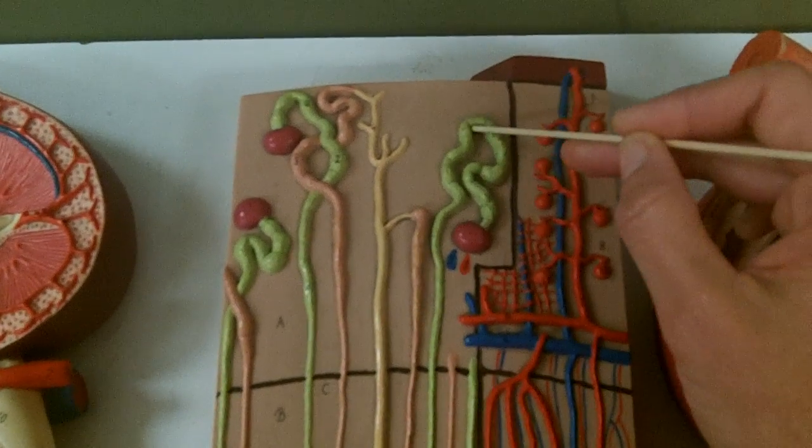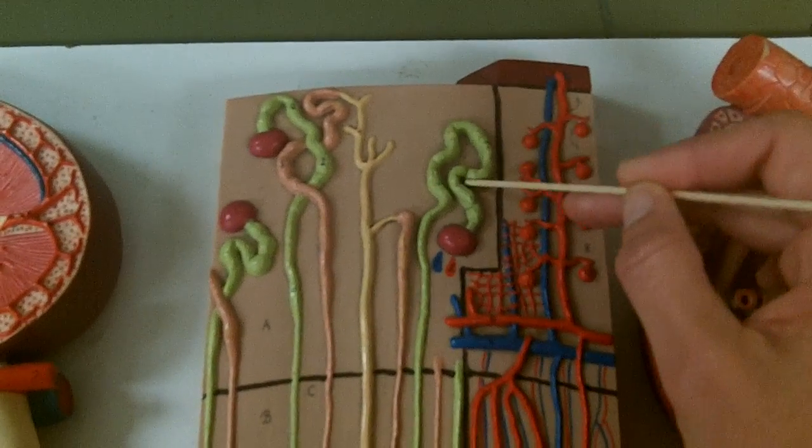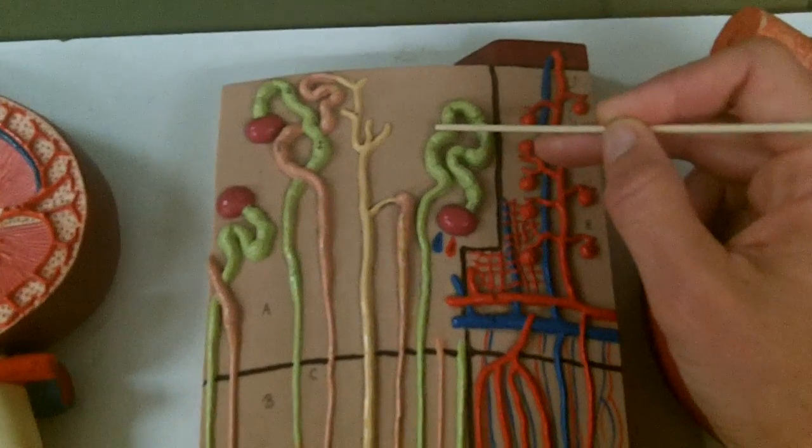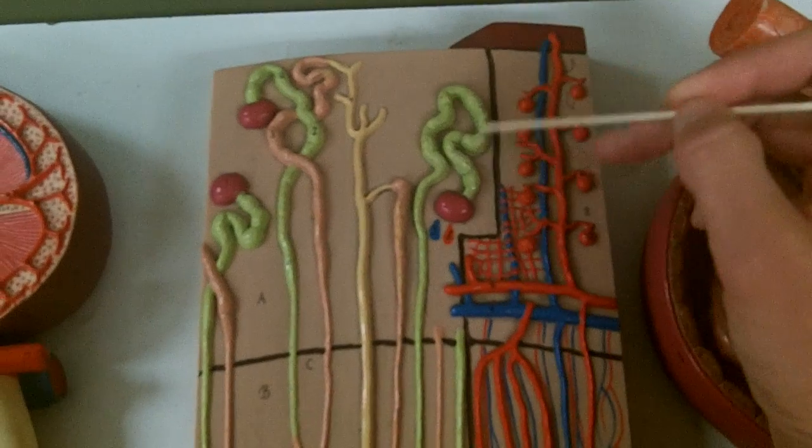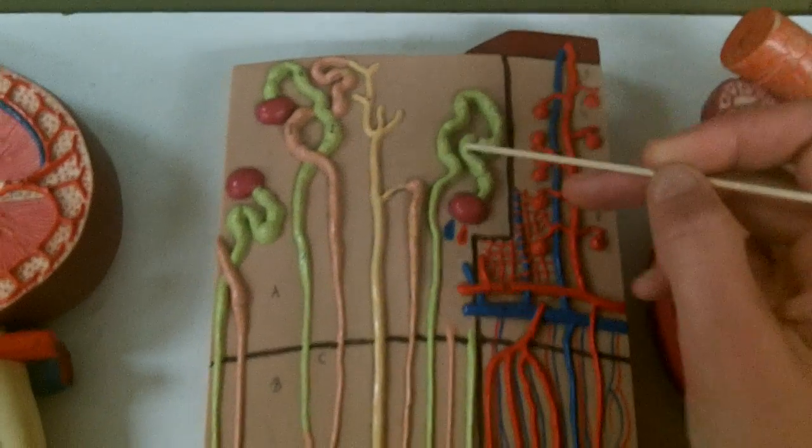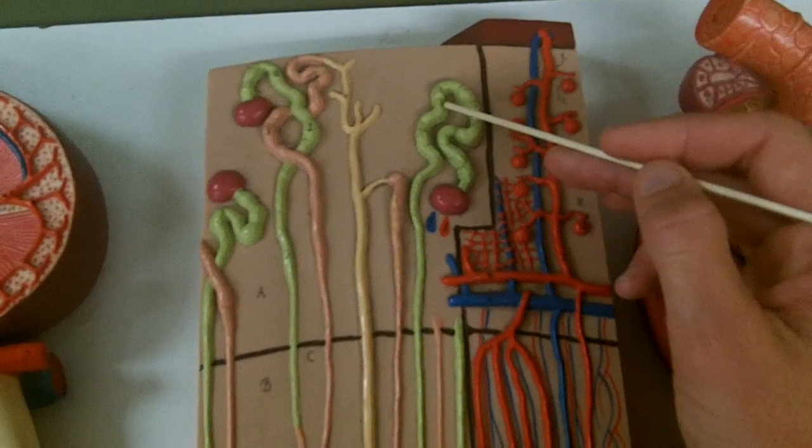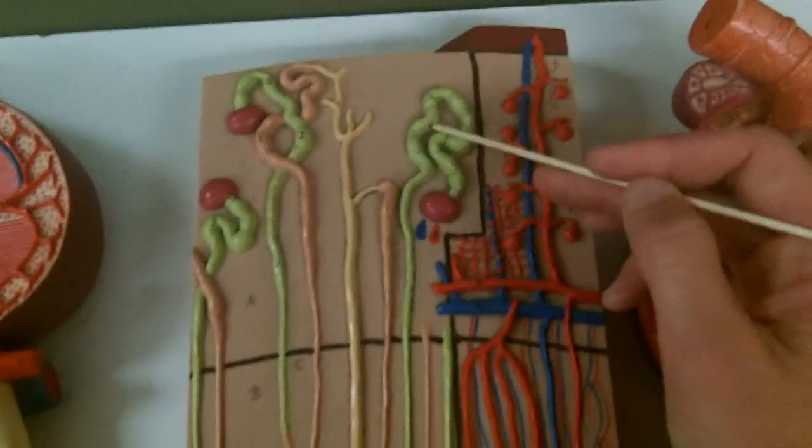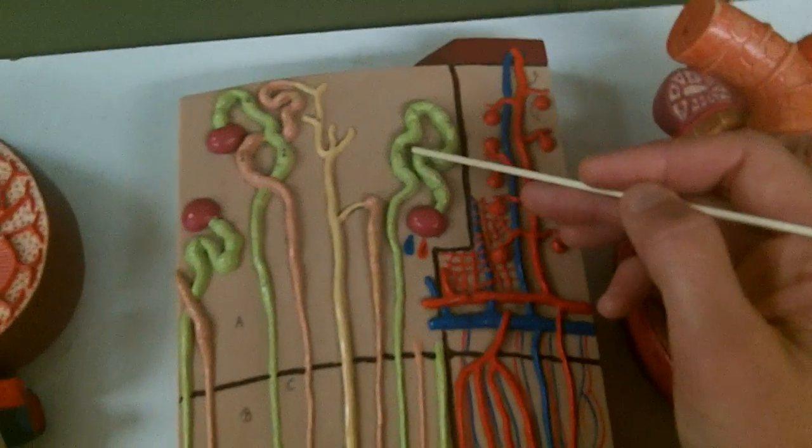So this part of the nephron is the proximal convoluted tubule. Most water and electrolytes, all glucose and all amino acids would be reabsorbed at this point in a normal healthy individual. So about 65% of the water that was filtered is reabsorbed here. 67% of the salts reabsorbed here.